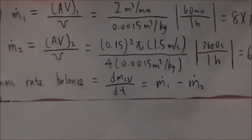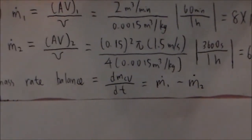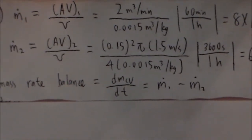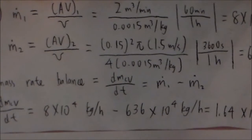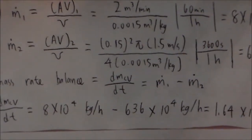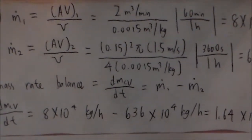The mass rate balance is equal to the mass flow rate that is coming in minus the mass flow rate that is going out. So the net mass flow rate would be 1.64 times 10 to the 4 kilograms per hour.